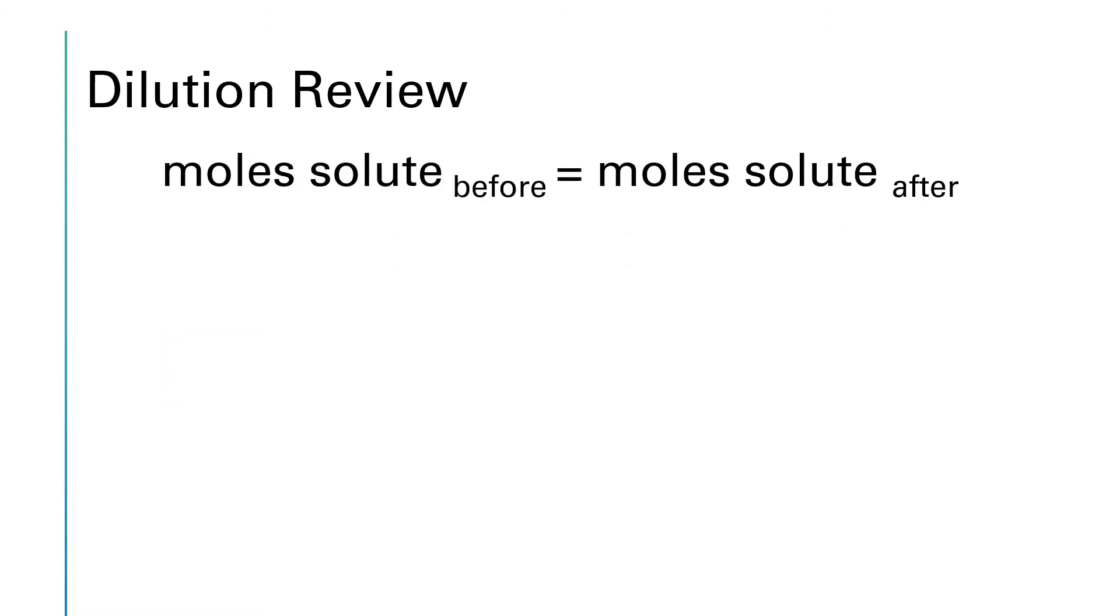The main idea behind the dilution equation is that the moles of solute that you have before you do the dilution are equal to the moles of solute that are present after the dilution. If we're talking about a solution the moles of solute are given by the molarity times the volume and so that's where we get M1V1 equals M2V2. All it's doing is saying the moles we have before we dilute are equal to the moles that we have after we dilute. Remember in that whole process of dilution what we're doing is adding a solvent so the moles of solute are the same but we have added more solvent which increases the volume.